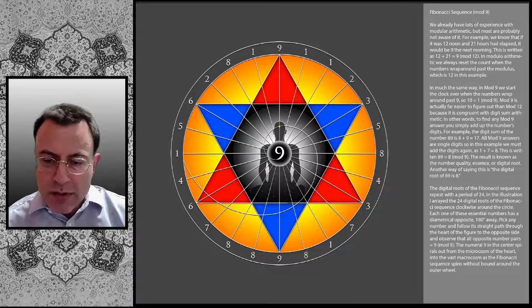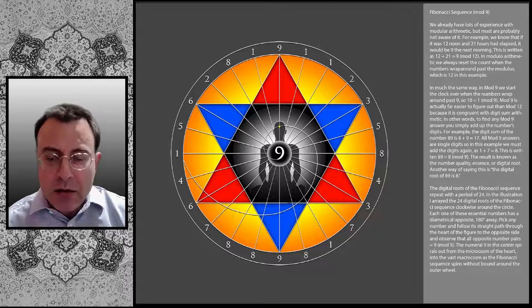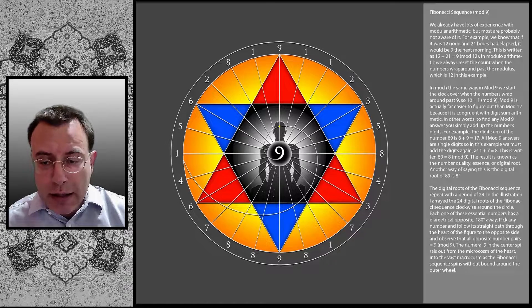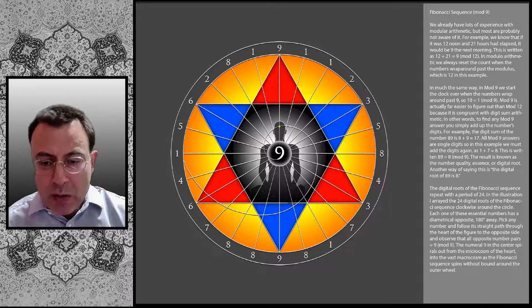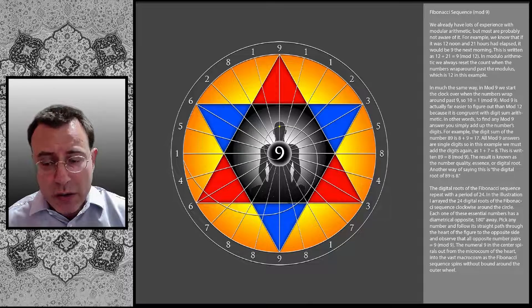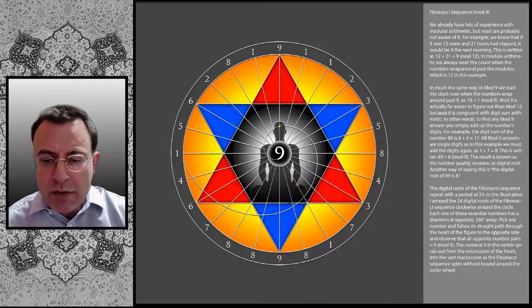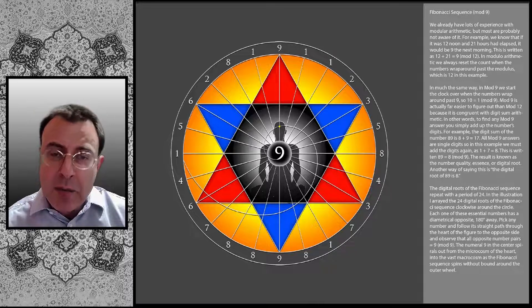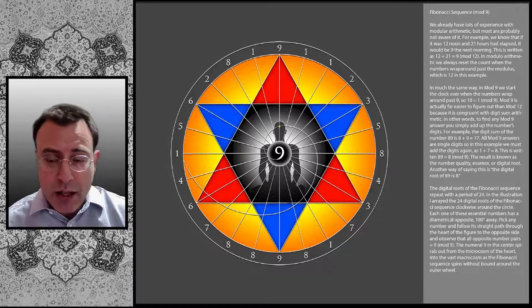The digital roots of the Fibonacci sequence repeat with a period of 24. In the illustration, I arrayed the 24 digital roots of the Fibonacci sequence clockwise around the circle. Each one of these essential numbers has a diametrical opposite 180 degrees away.